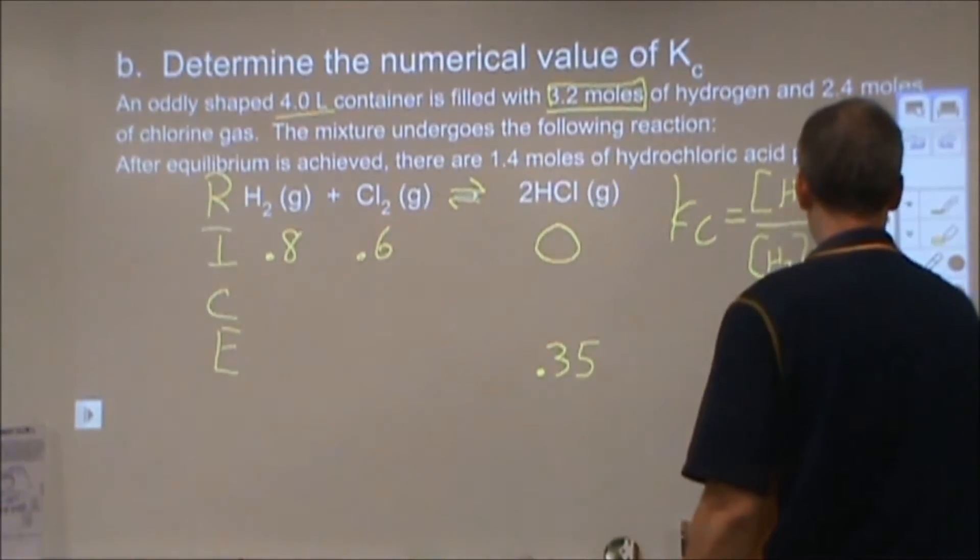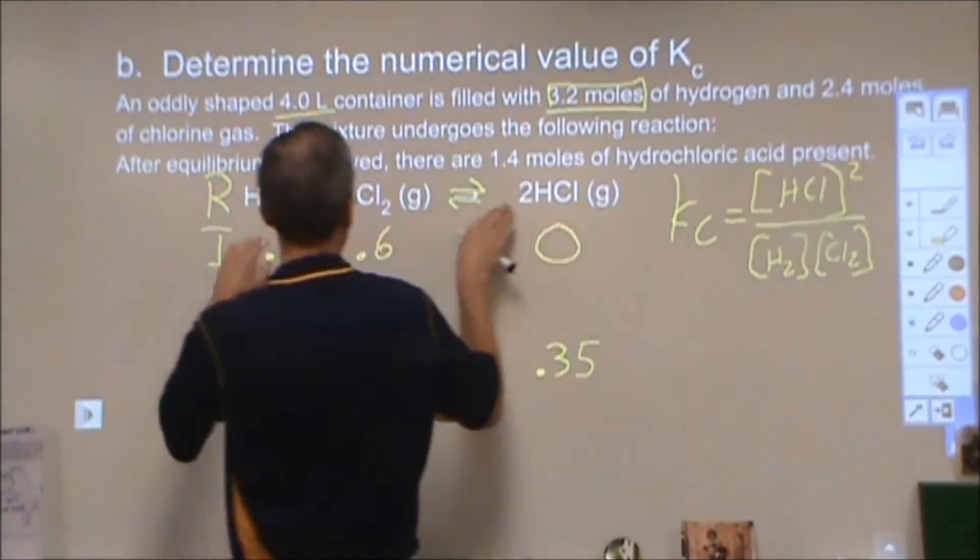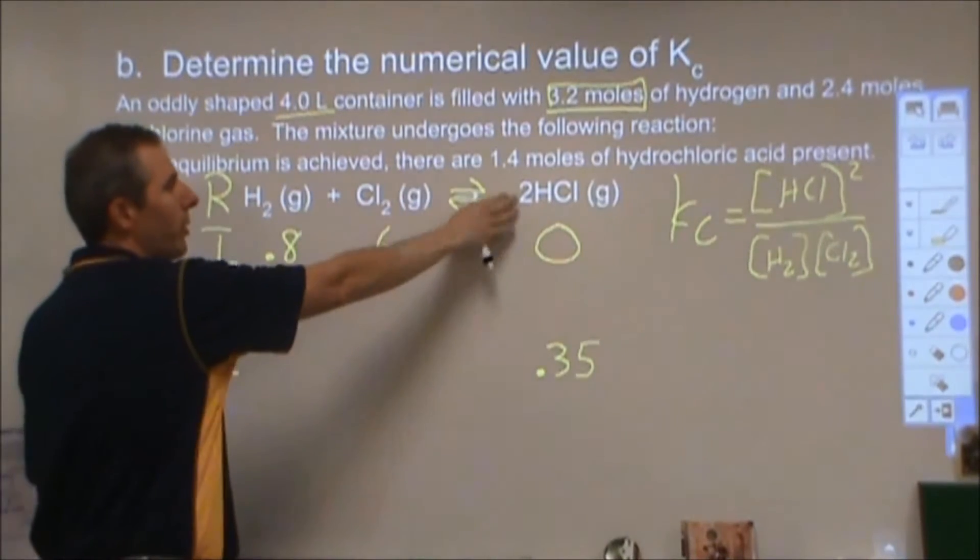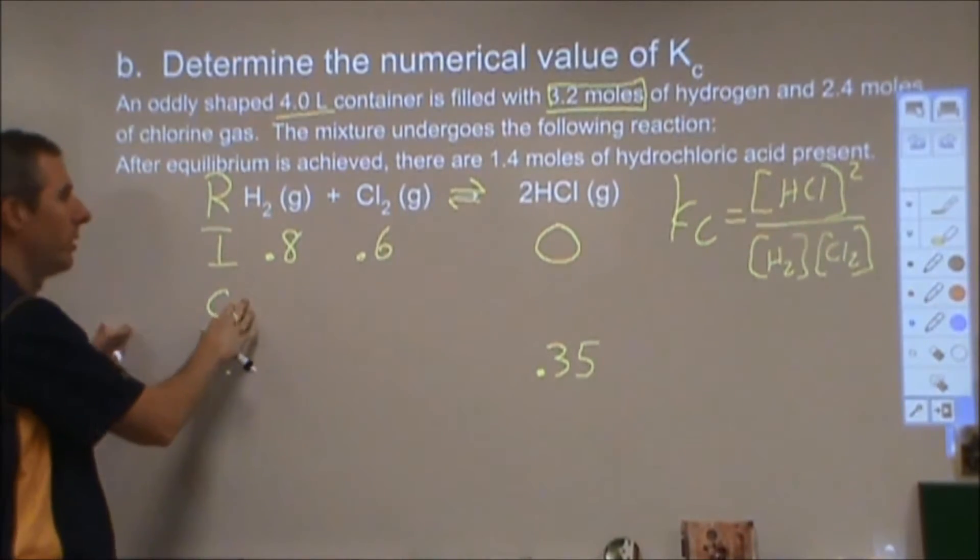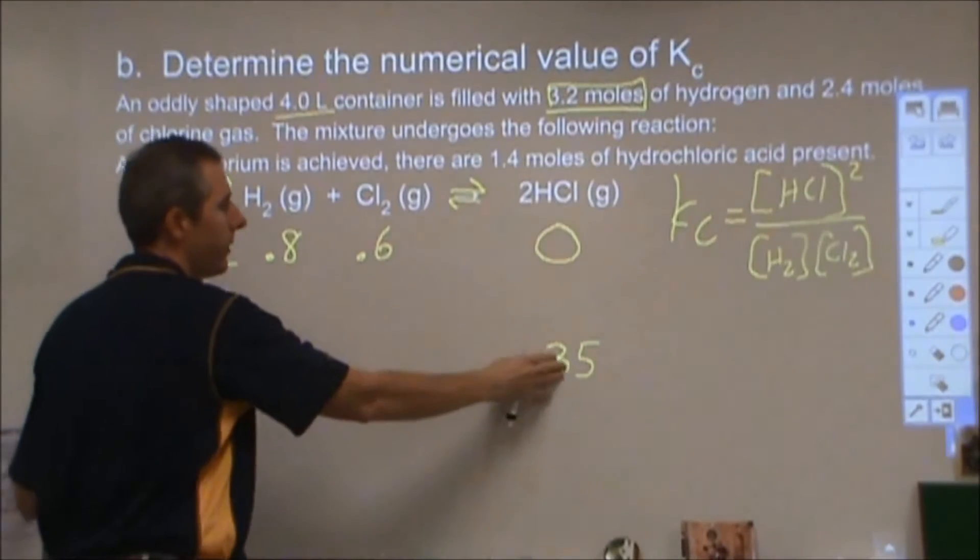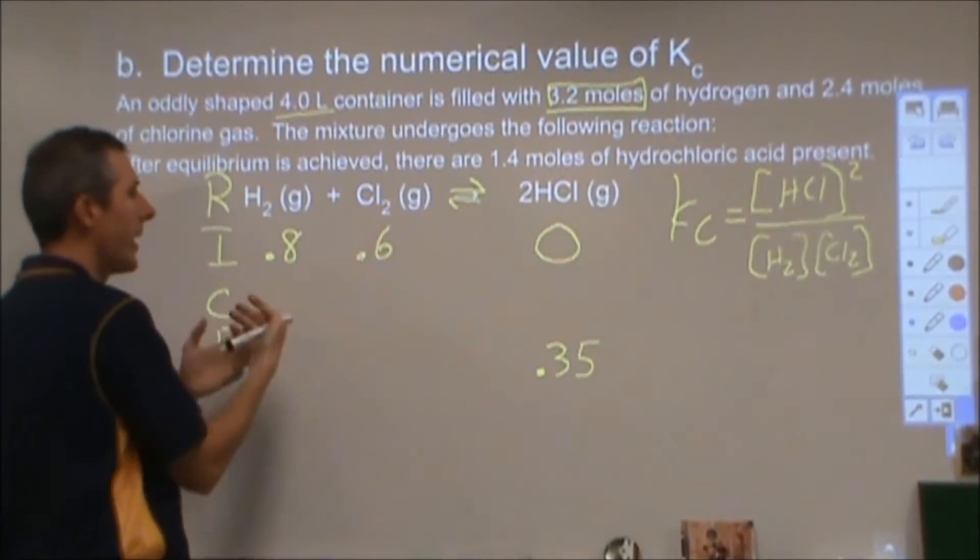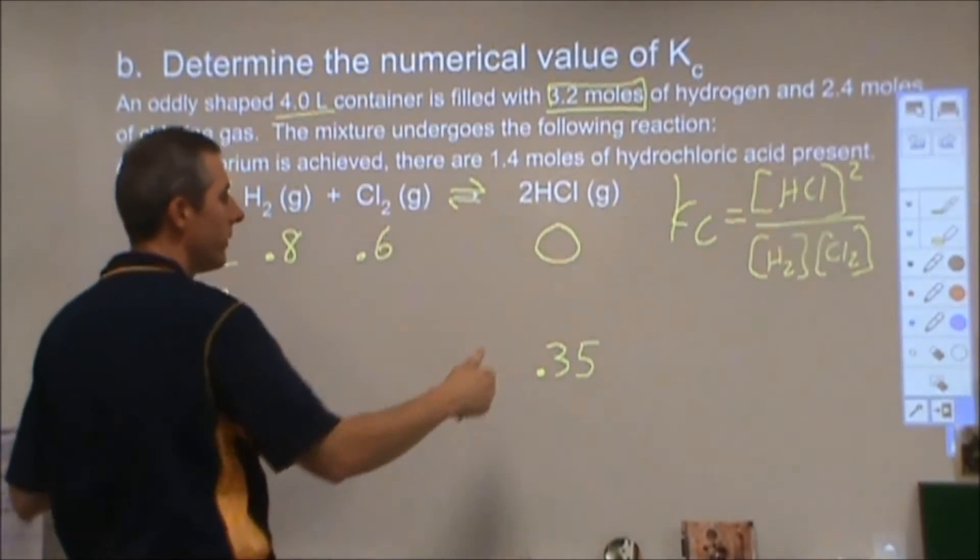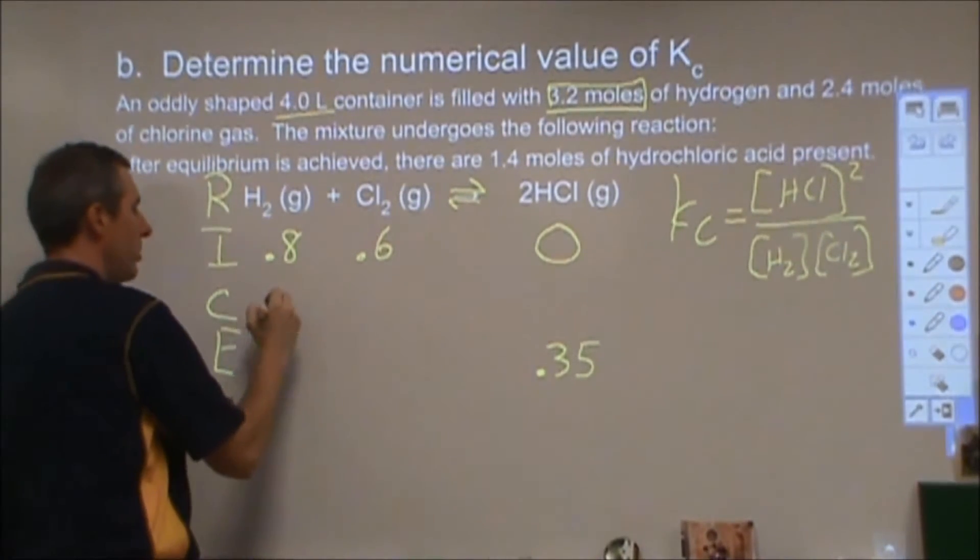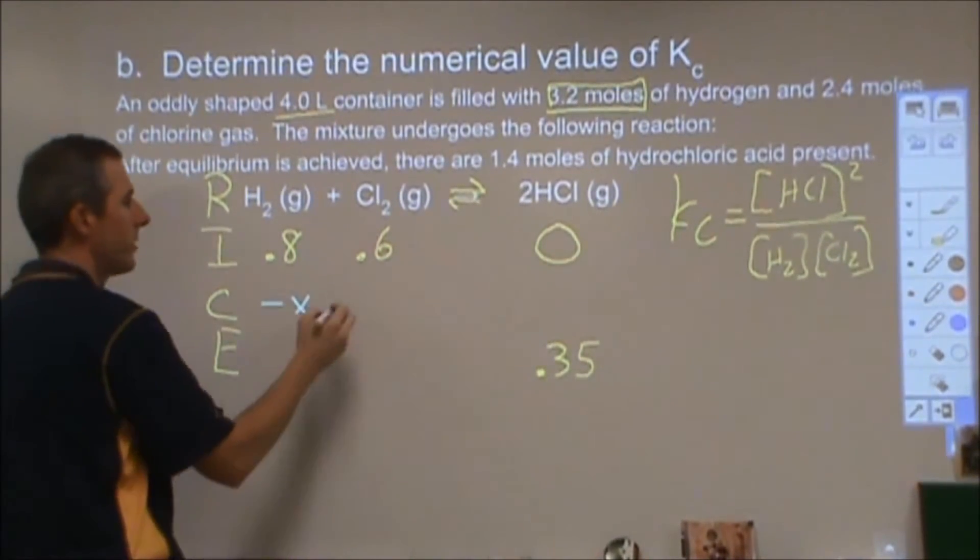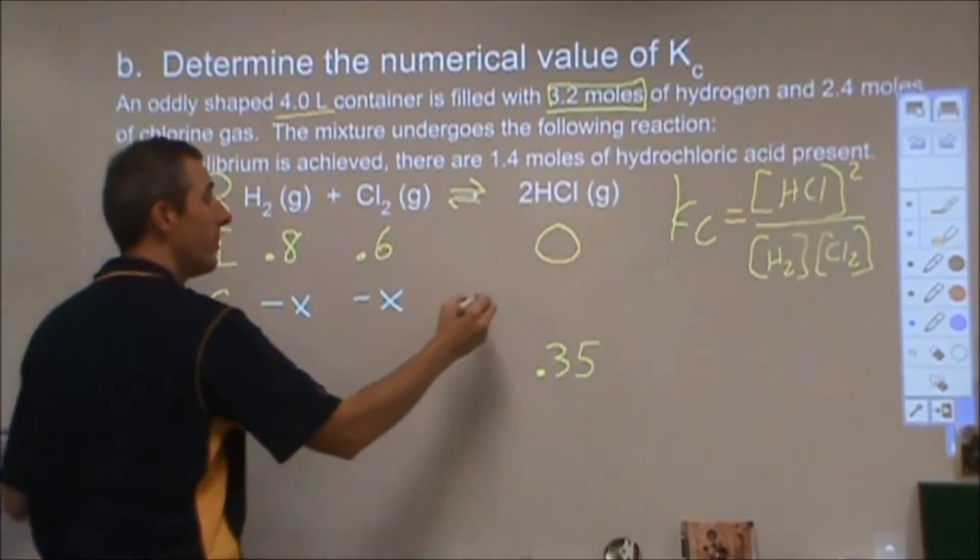In addition to that, by knowing the chemical reaction, I know the proportionalities of their changes. So I don't know how much each thing is changing by except for this. But I do know that for every one of these and one of these that gets reacted, it's going to produce two of these.